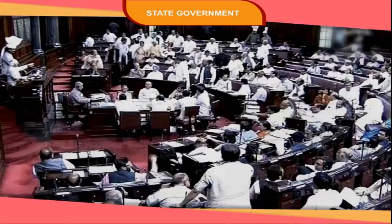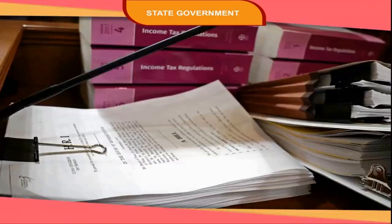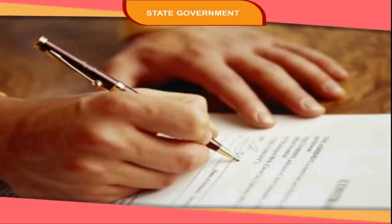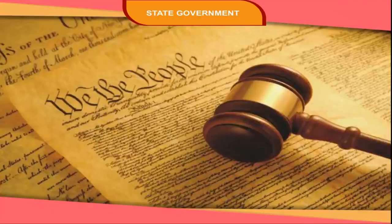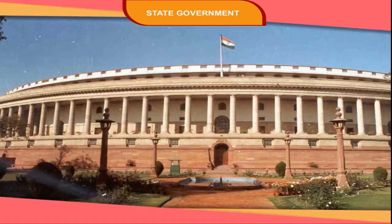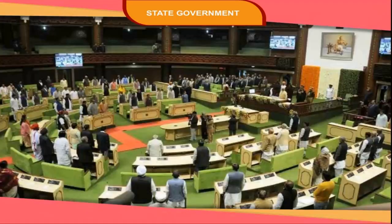The Speaker can be removed from office earlier by a resolution passed by the House. He decides whether a bill is a money bill or an ordinary bill. No bill or resolution can be passed without his permission. He maintains discipline in the House and sees that the House functions according to the rules. The Vidhan Sabha makes laws on subjects mentioned in the State List, and the procedure for passing the law is similar to that at the centre.